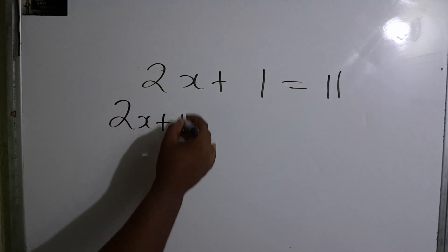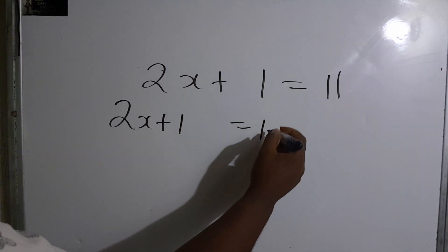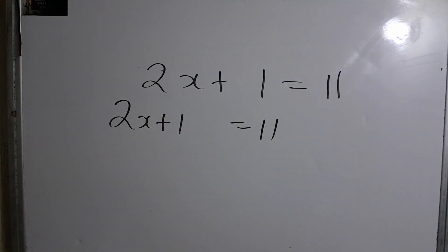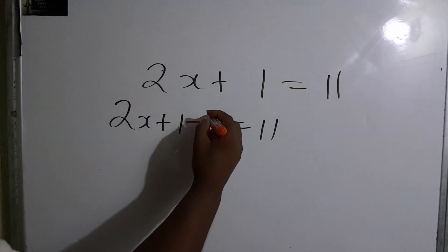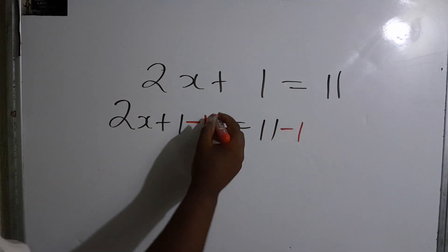Again, we take the inverse of the plus 1. In this case, the inverse of plus 1 would be minus 1, so minus 1 from both sides.